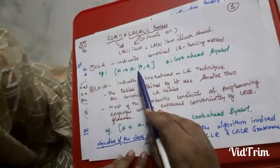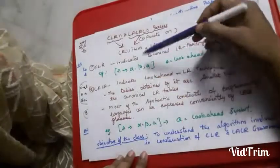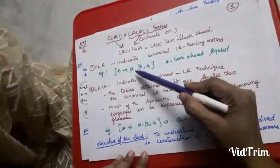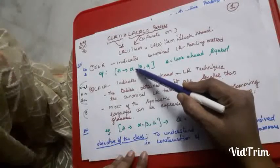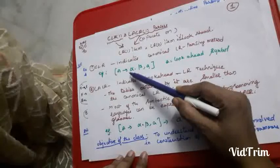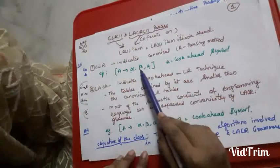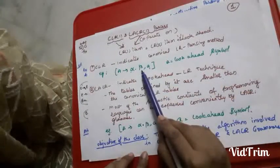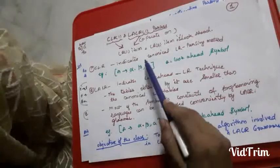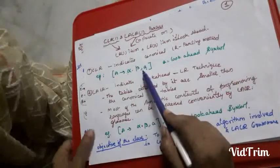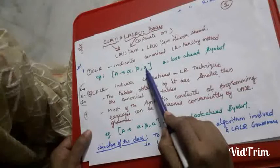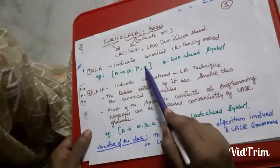All productions used under CLR or LALR are of the form A goes to alpha dot beta, where alpha and beta are symbols. The dot operator indicates that the symbol before the dot has already been read by the parser, while the symbol after the dot is a non-terminal which the parser has yet to read.